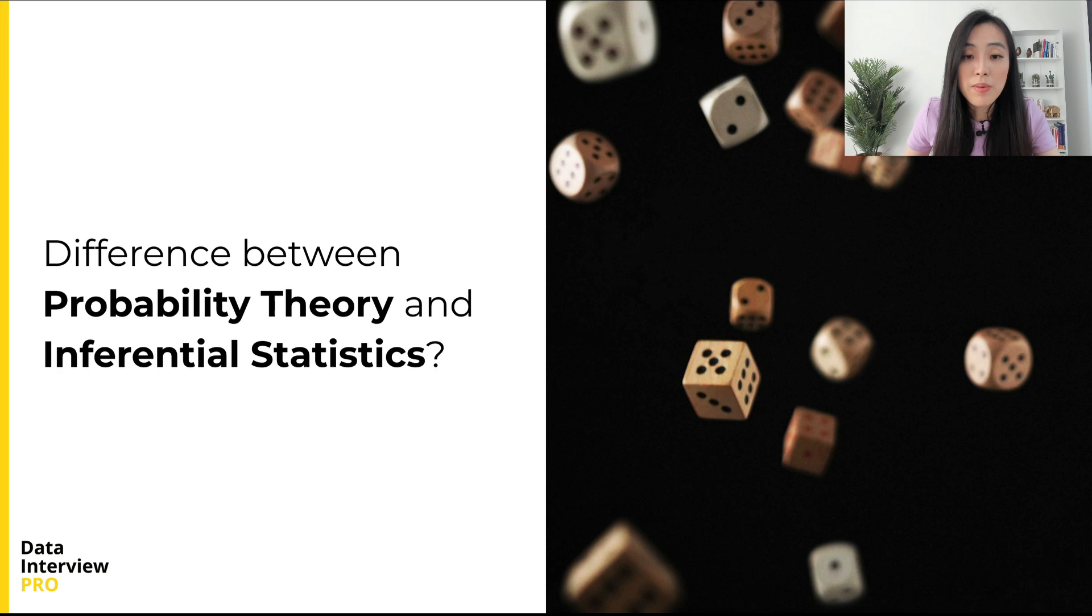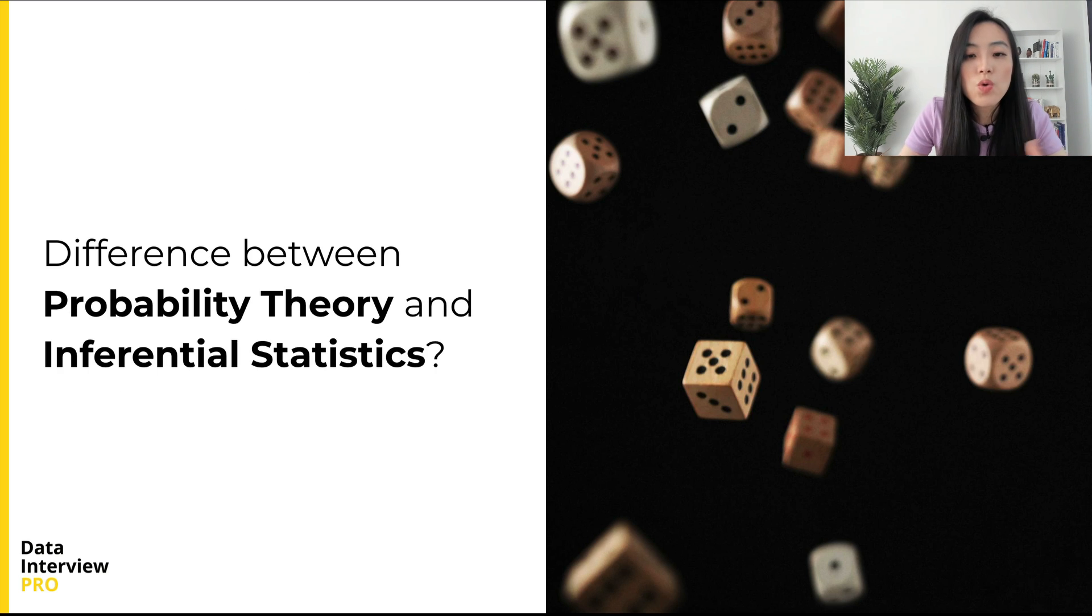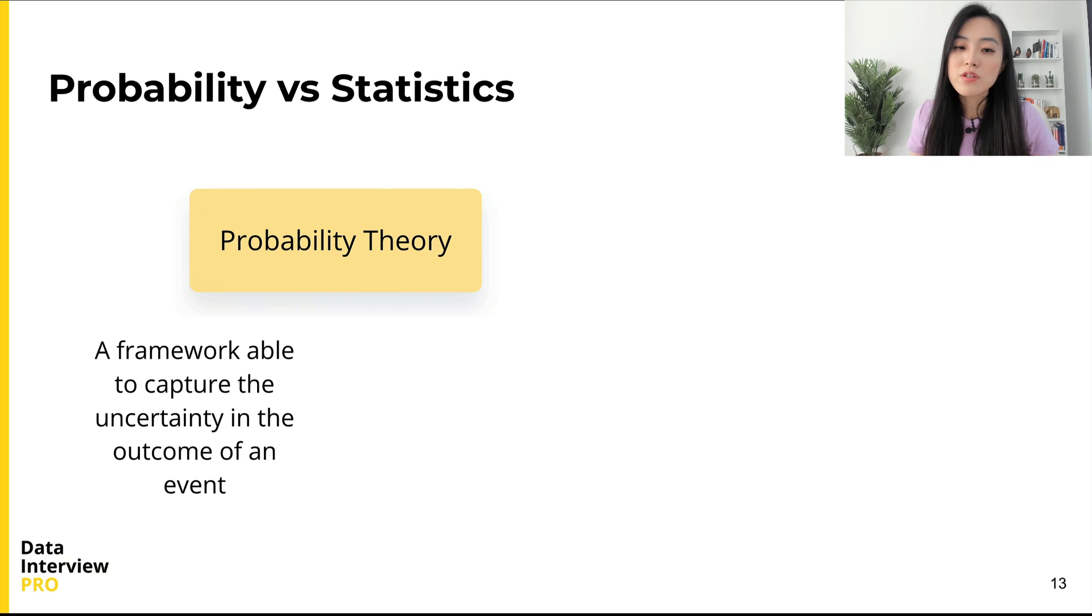Now, we know what is probability and probability theory, so what is the exact difference between probability and statistics? What we really want to compare is probability theory and inferential statistics, because these two are often compared with each other. So basically our question is, what is the difference between probability theory and inferential statistics?